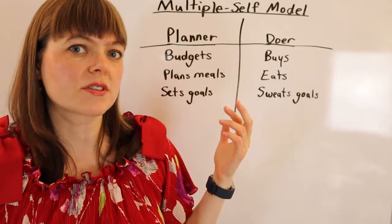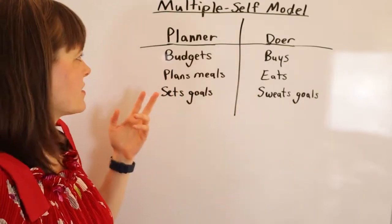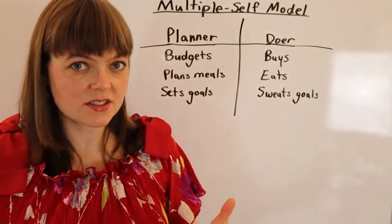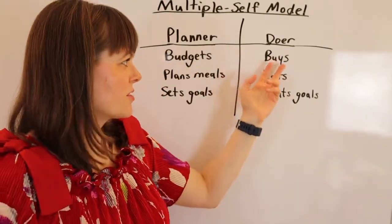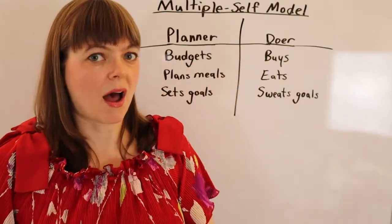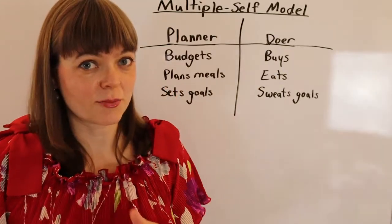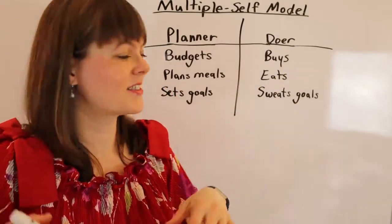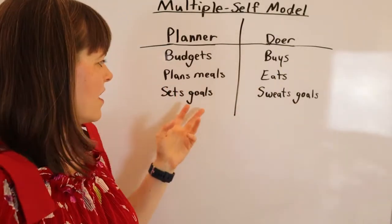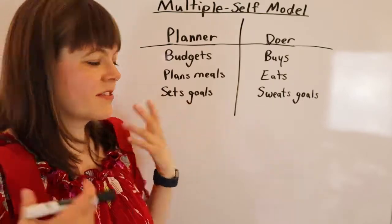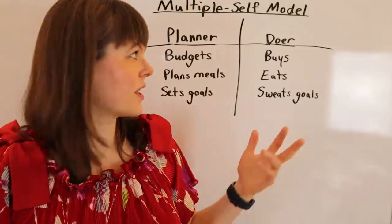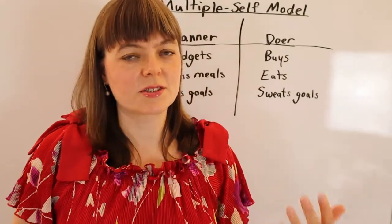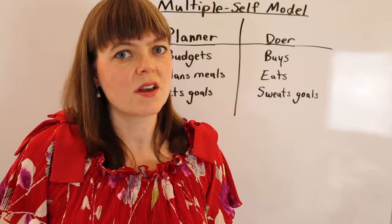What are the different roles of these parties? The planner self budgets; the doer self actually buys. The planner self plans your meals; the doer self actually eats those meals. The planner self sets the goals and the doer self — I said — sweats the goals.